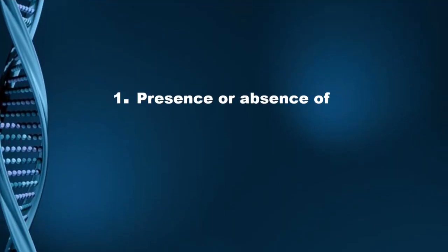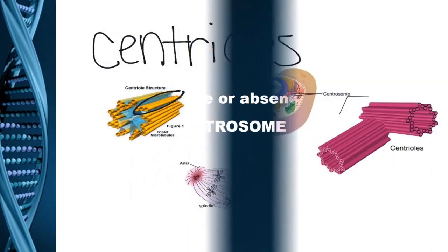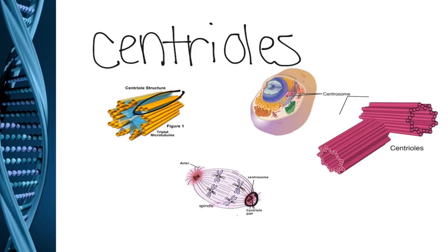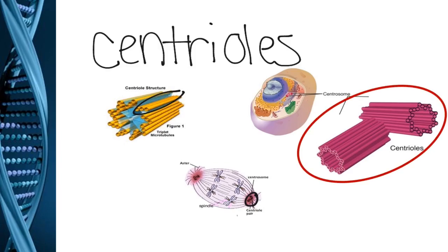The first difference is the presence or absence of a cell organelle, that is the centrosome. In an animal cell there is a cell organelle named centrosome. A centrosome is a structure made up of two units which are known as centrioles, as you can see here. Each centriole is responsible for giving out spindle fibers during cell division.